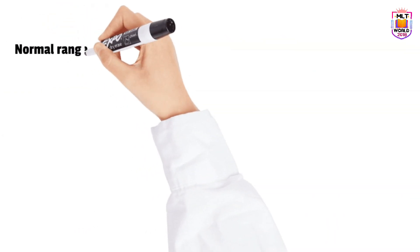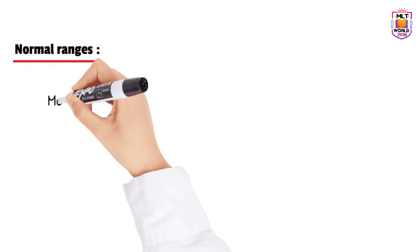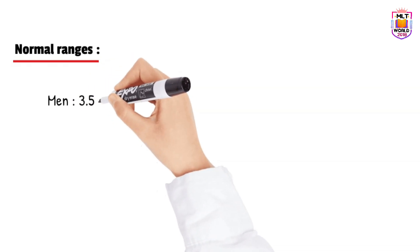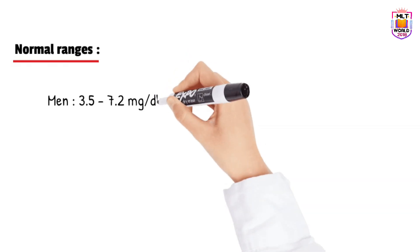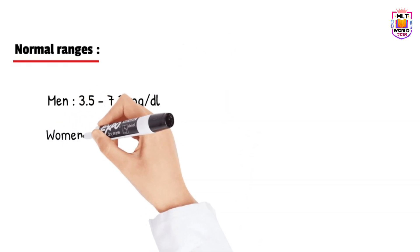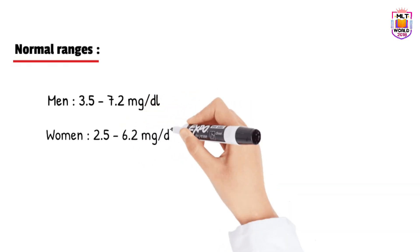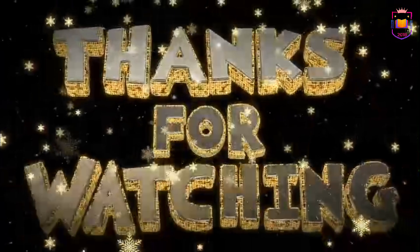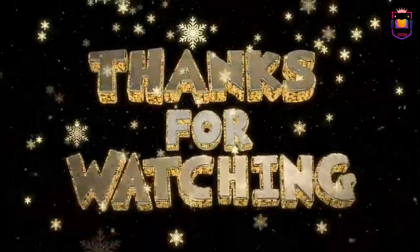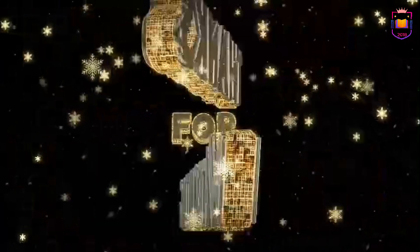Now for the normal ranges — as discussed in previous videos, normal ranges vary from lab to lab, but generally: for males, 3.5 to 7.2 mg/dL; for females, 2.5 to 6.2 mg/dL. If the value in males is more than 7.2 mg/dL or in females more than 6.2 mg/dL, it means uric acid is high and the patient needs treatment.